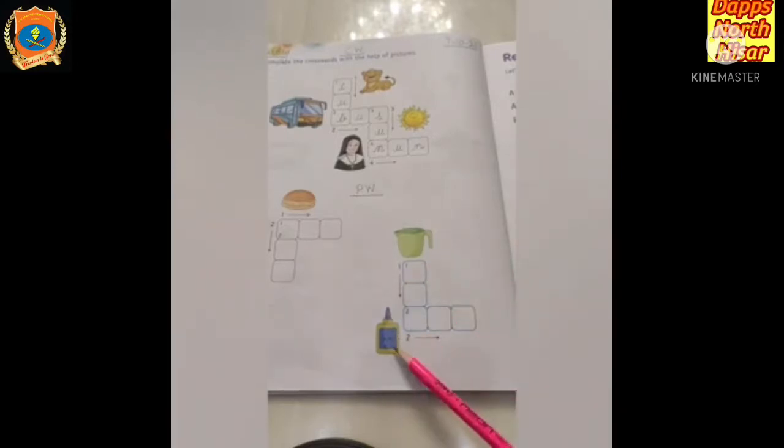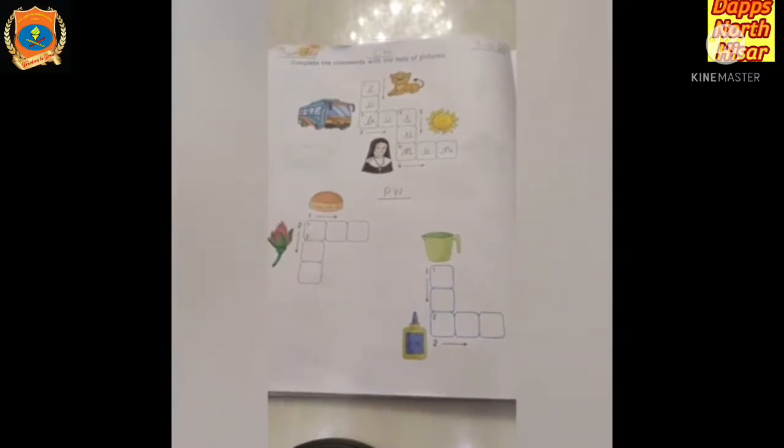Next is gum, gum ka arrow sideward ja ra hai, so hum aise likhhenge, gum, okay? I hope it is clear to everyone.